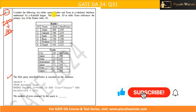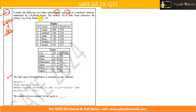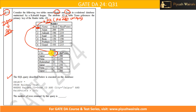Consider the following two tables — we have two tables, the first one is the Rider table and the second is the Team table in a relational database for a combat league. The attribute id in the Team table references the primary key id of the Rider table. A primary key is used to uniquely identify each and every row in a table, and it has a NOT NULL plus UNIQUE constraint — meaning no null values are allowed and all values must be unique.